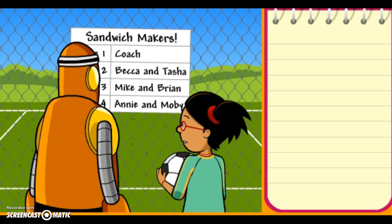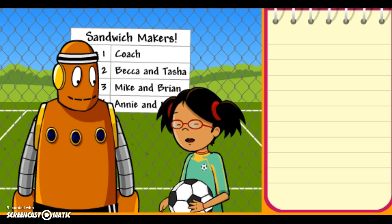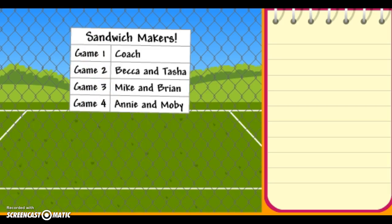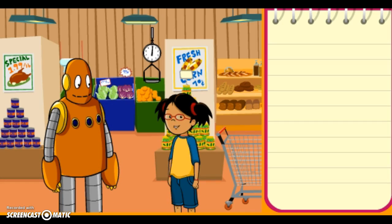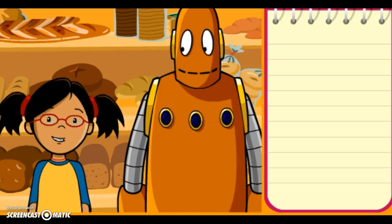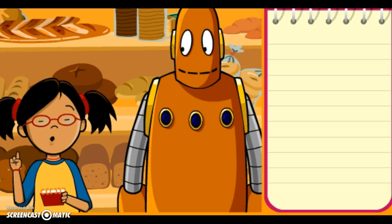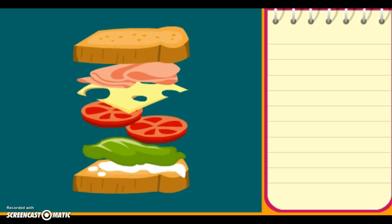Oh no, Moby! It's our turn to make sandwiches for the soccer team. We totally forgot. There are 8 players and each one gets a sandwich — that's 8 sandwiches. Each sandwich needs 2 slices of bread. How many slices do we need altogether?